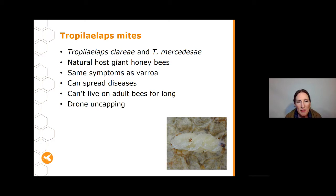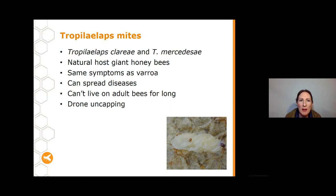The main difference between Tropilaelaps and Varroa mites is that Tropilaelaps can't live very long on adult bees — only about three days — so they're mostly found in the brood. While we can look for Varroa using a sugar shake and alcohol wash as well as drone uncapping, we can really only find Tropilaelaps mites when we do a drone uncapping, because that's where the majority of them will be.